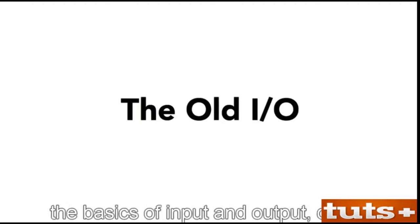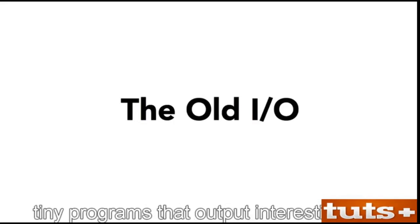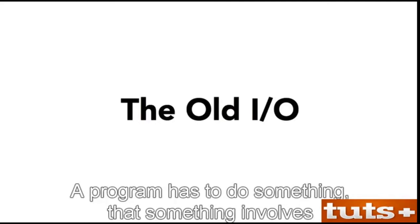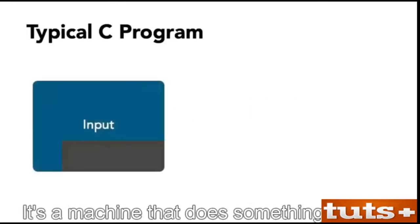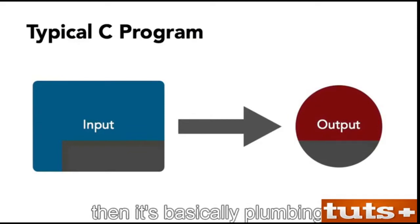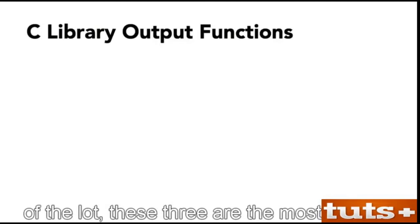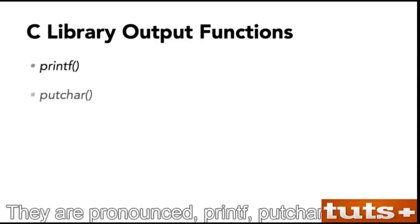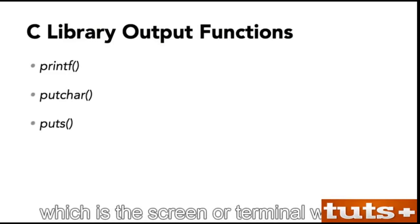To handle that task, it helps to know the basics of input and output, or I/O. In this movie, I introduce you to the concept of I/O and how that plays into programming. You'll get to explore some basic I/O functions, and use one of those functions to create tiny programs that output interesting text. A program has to do something — that something involves taking input and generating output. This is how a typical C program works: it's a machine that does something to input and then generates output. The C library offers a host of output functions, the three most popular being printf, putchar, and puts.